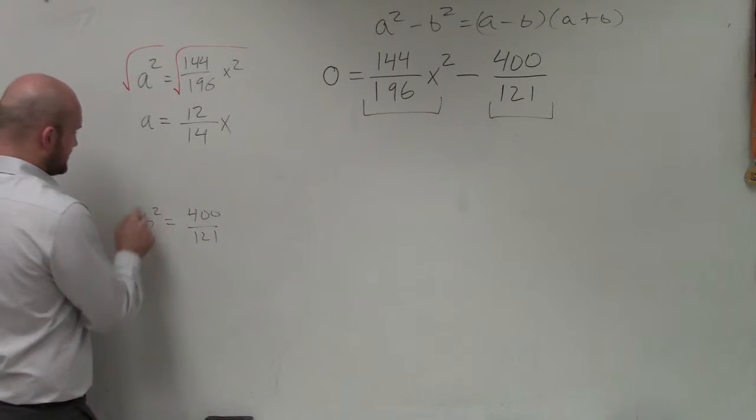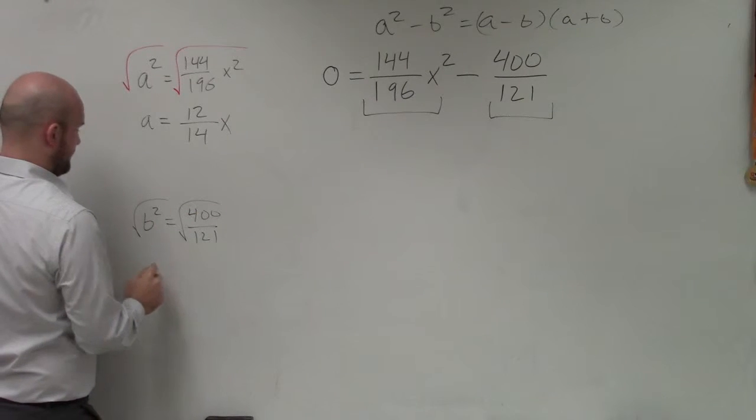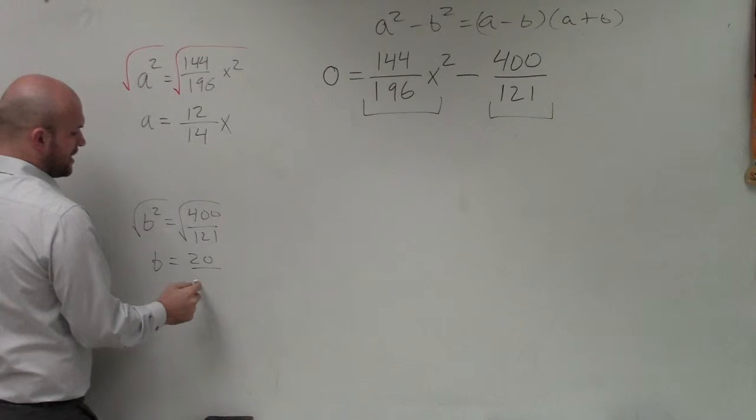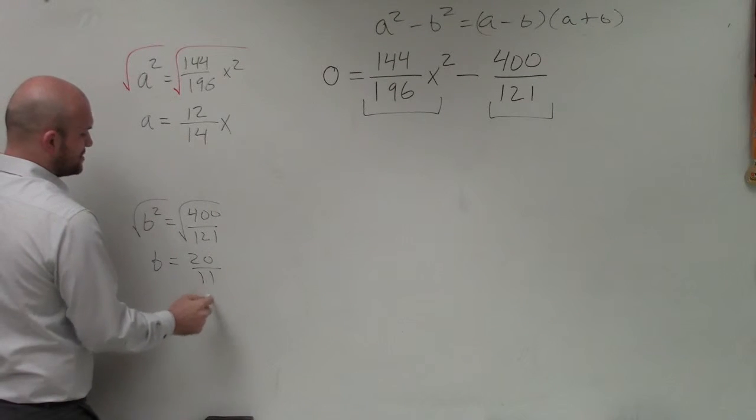And then b squared, take the square root. And therefore, b is going to equal the square root of 400 is 20 over the square root of 121 is going to be 11.